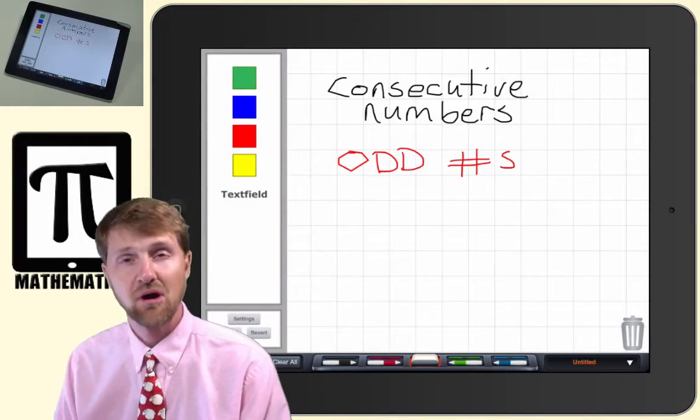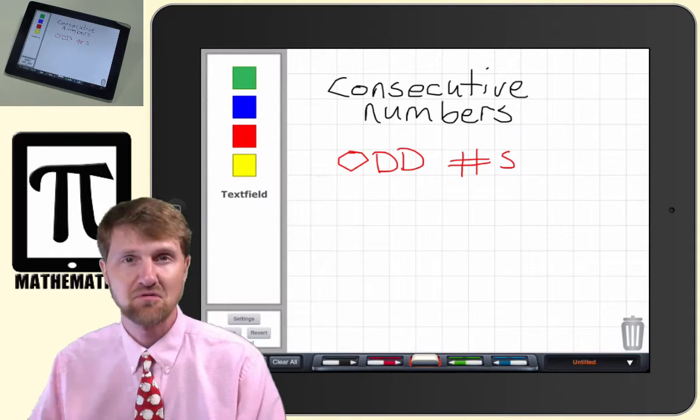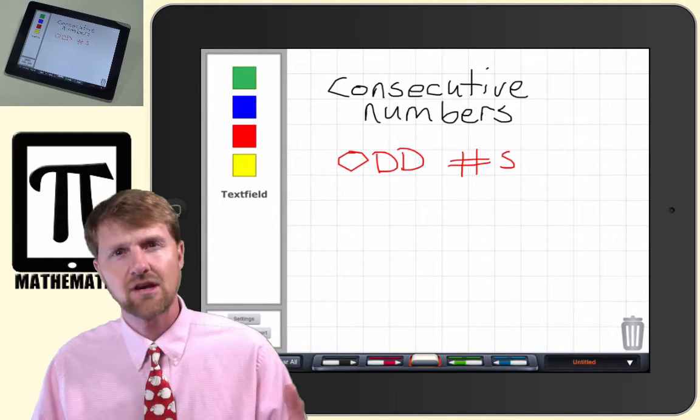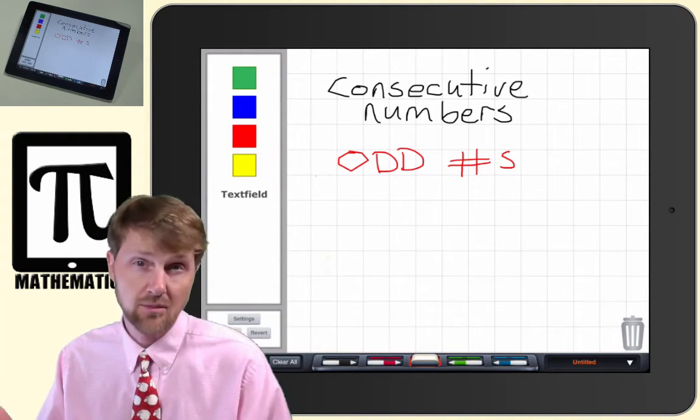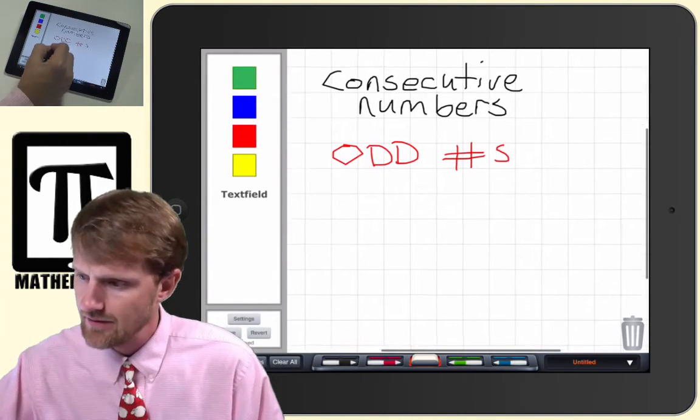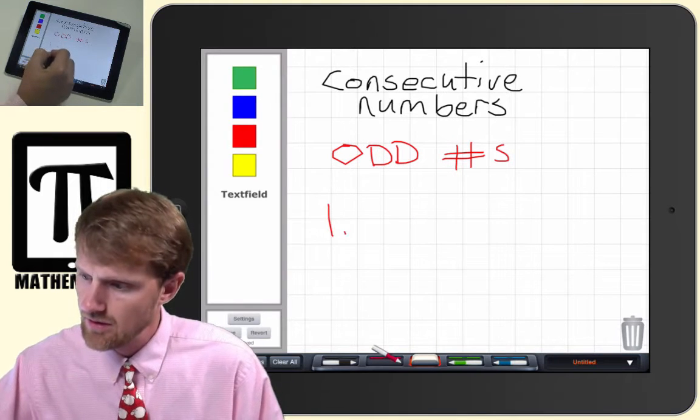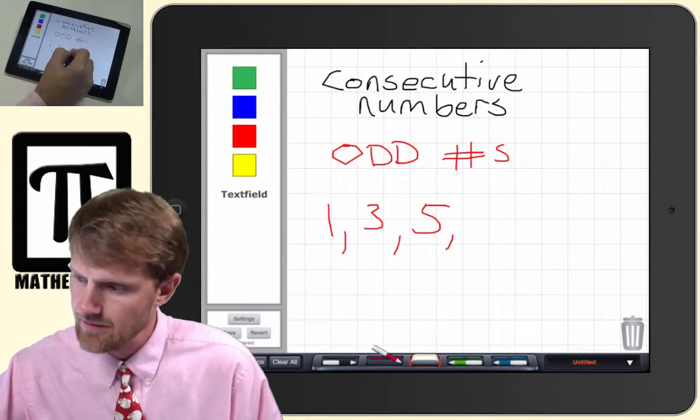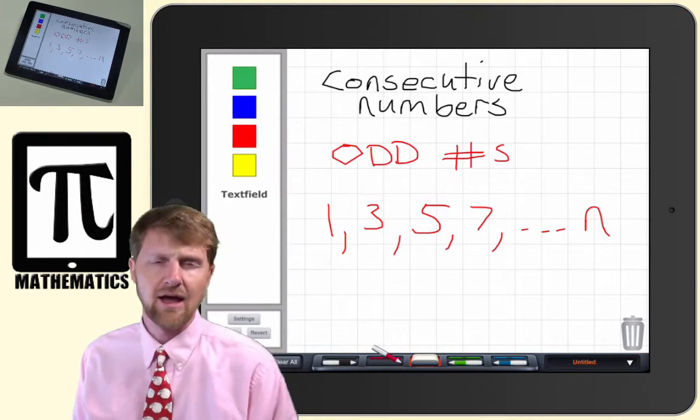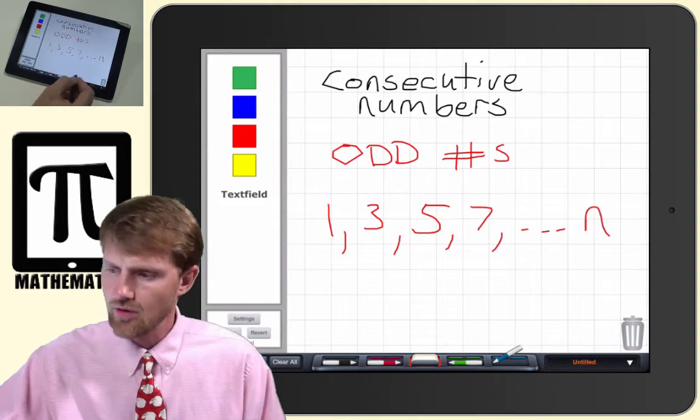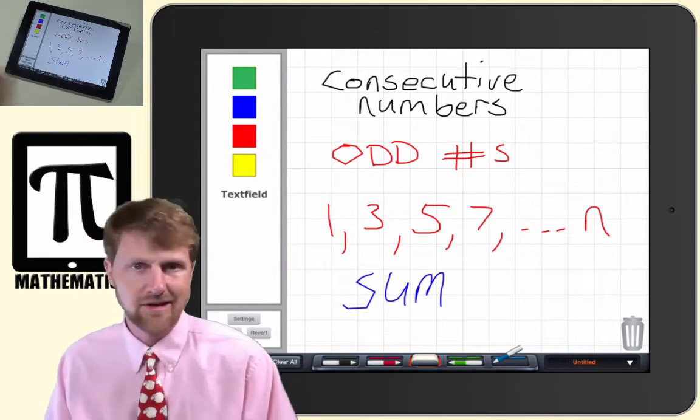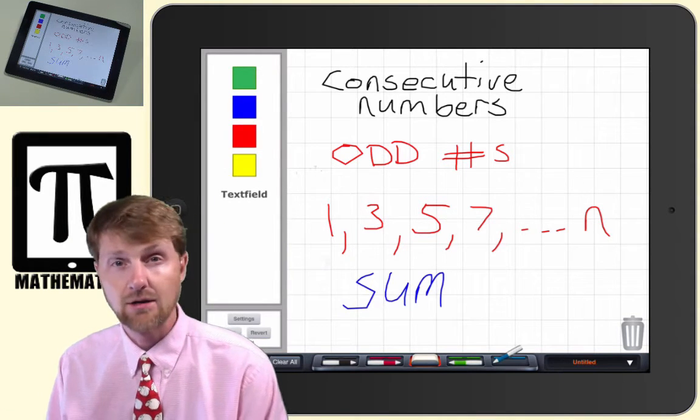Hi, welcome to another video. PyPad Mathematics. I'm Professor Lam and this video is going to be another one in the series on consecutive numbers, and this one's on odd numbers, so consecutive odd numbers, meaning you have one, three, five, seven, all the way to n. And what we're trying to do, or the problem that we're focusing in on, is finding the sum of n consecutive odd numbers.